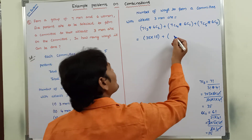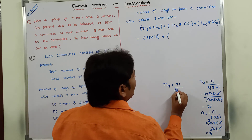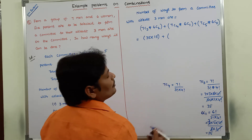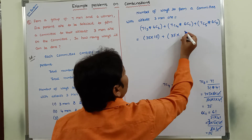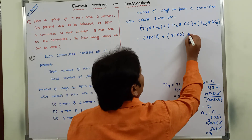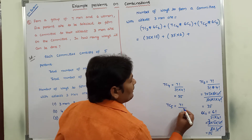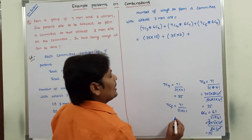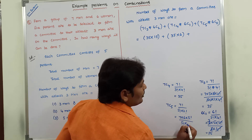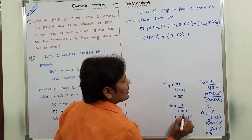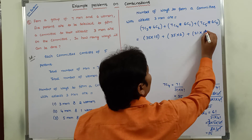Next, 7C4 equals 7 factorial divided by 3 factorial into 4 factorial, which also equals 35. And 6C1 equals 6. So Case 2 gives 35 into 6. Then 7C5 equals 7 factorial divided by 5 factorial into 2 factorial, which equals 21. And 6C0 equals 1. So Case 3 gives 21 into 1.